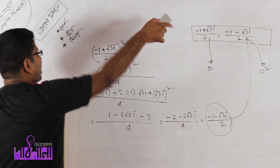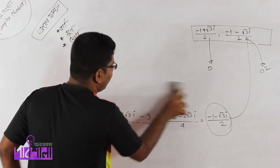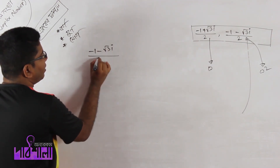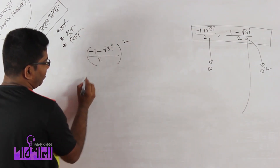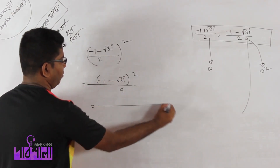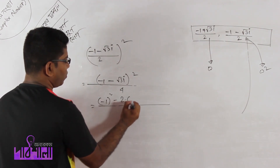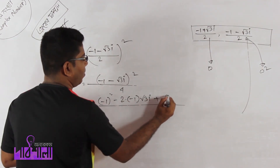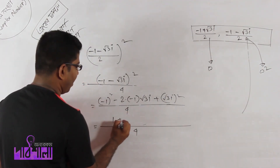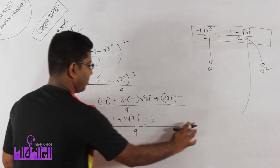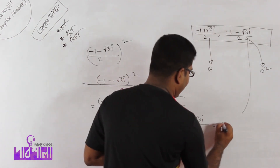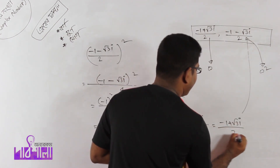Now, if you want to verify, write minus 1 minus root 3i whole squared divided by 4. Expanding: minus 1 whole square minus 2 into minus 1 into root 3i plus root 3i whole square, all divided by 4. This gives minus 2 plus root 3i divided by 4, which simplifies to minus 1 plus root 3i divided by 2.